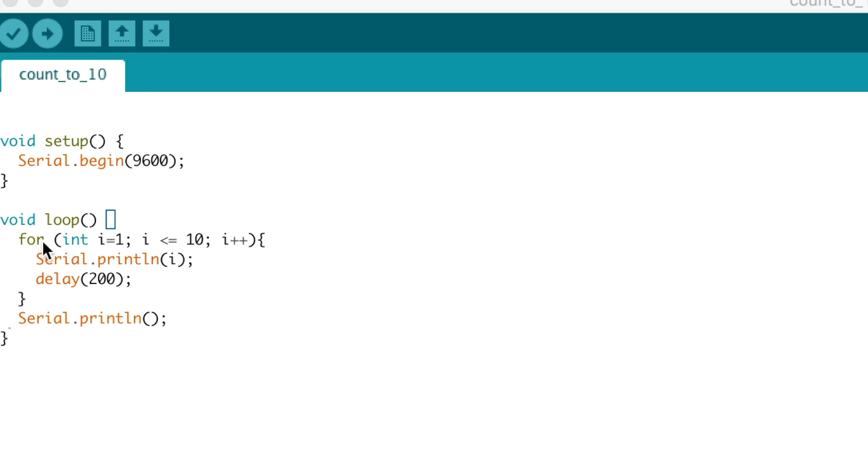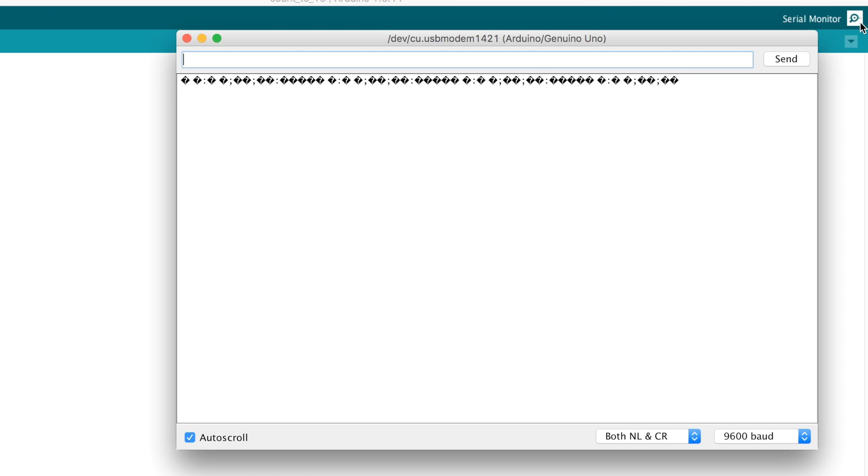The problem is easily demonstrated by uploading a simple sketch that will count to 10 in a loop. Notice that I set the baud rate to 9600. However, after uploading the code, when I open the serial monitor, the output is nonsensical.